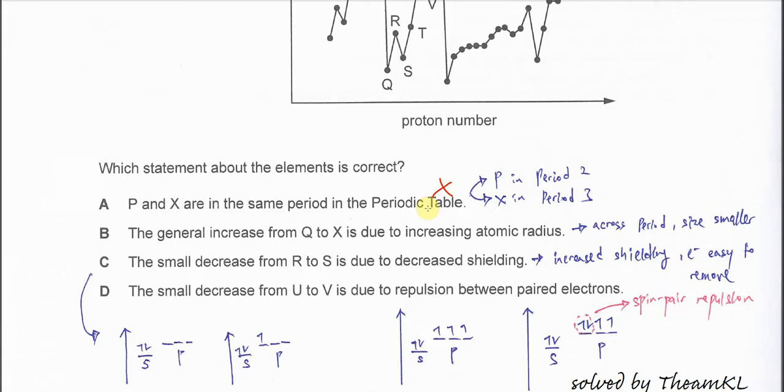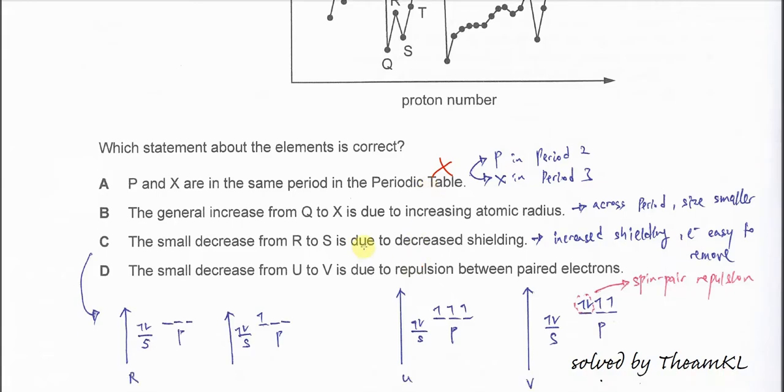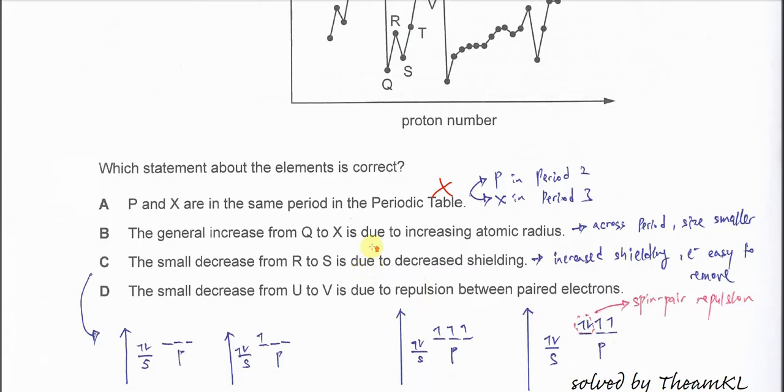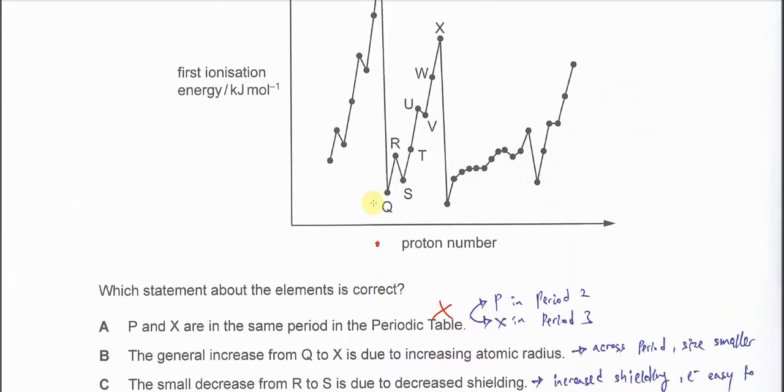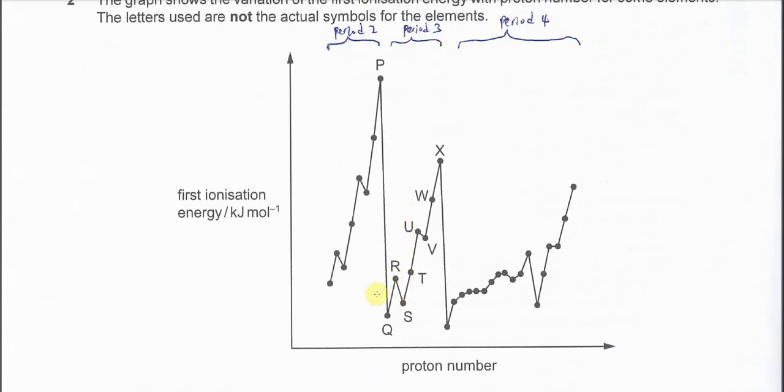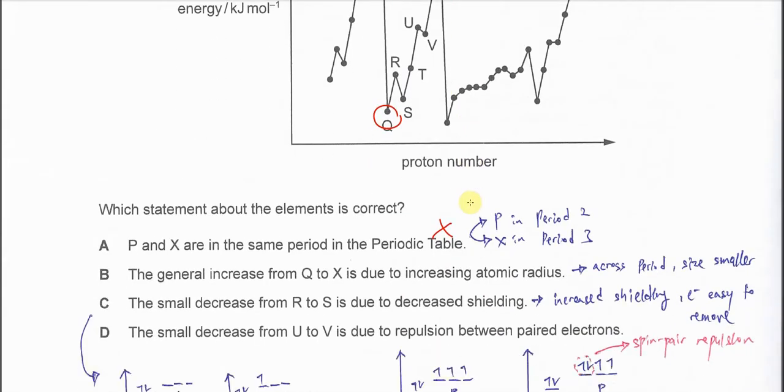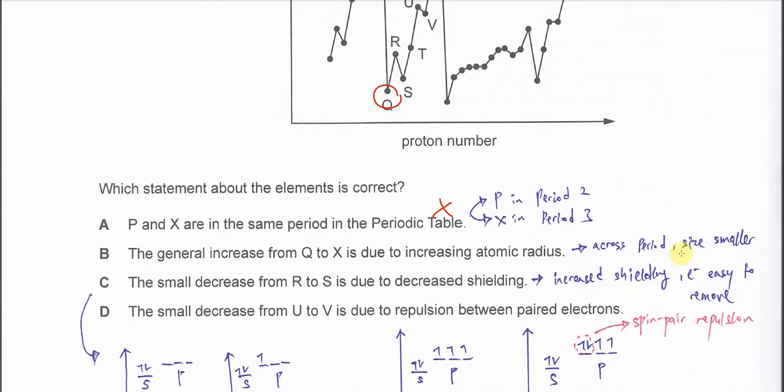B. The general increase from Q to X is due to increasing atomic radius. Q to X means period 3. So the increase of first IE is actually not really increasing the atomic radius. Because across the period, we know that size is smaller.